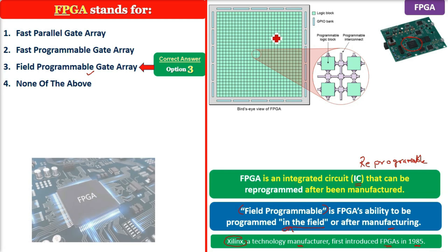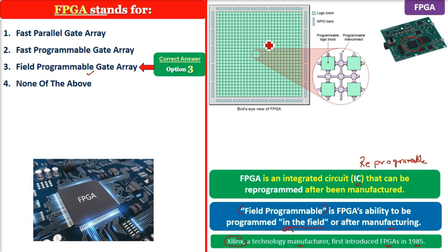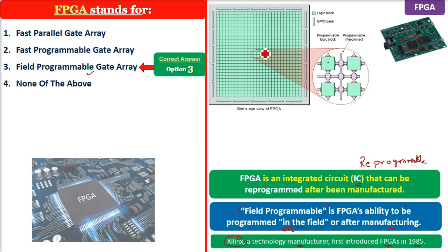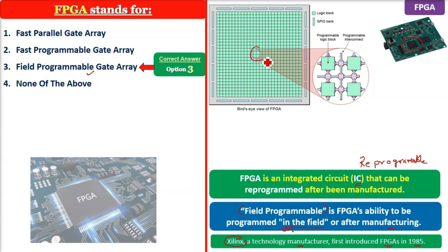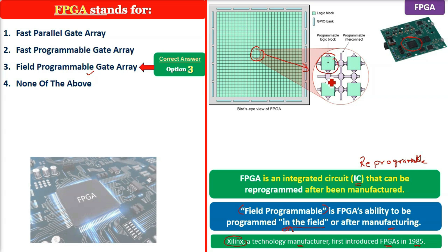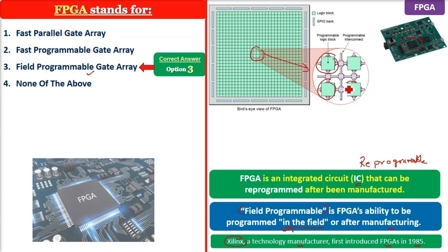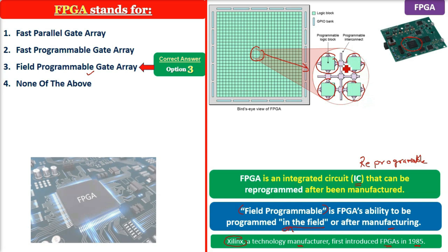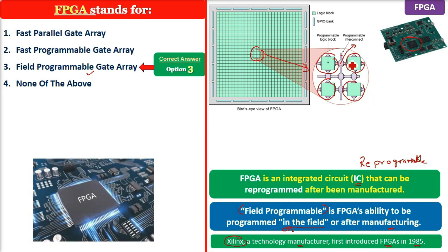Now let's look at a peek-hole view of the FPGA. You can see various programmable logic blocks in the broad view — these are the logic gates — and these are the programmable interconnects.